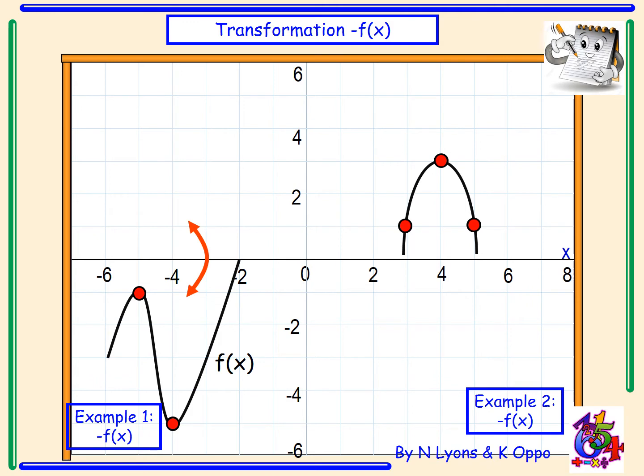So flipping over our x-axis our new graph appears and we need to put our coordinate points in. Now as you can see the point (-5, -1) then changed to (-5, 1) and the point (-4, -5) became (-4, 5).